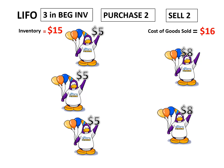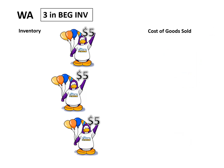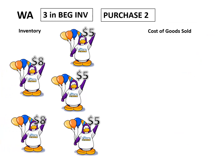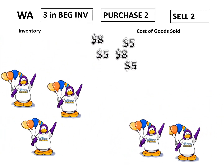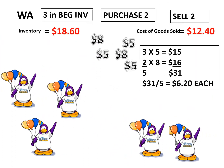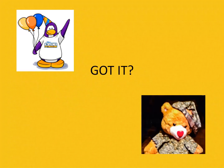Weighted average must be next. Begin with three. Purchase two at eight. Then we have to figure out the average price. So that's all there is to it.